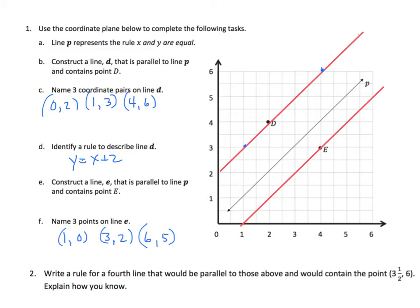And number 2, which again relates to the same graph and chart here, it says write a 4th rule that would be parallel to those above and would contain the points 3 1/2, 6. Well, I know that if I add or subtract from X to find Y, I end up with a line that's parallel to Y. And that's why I know.